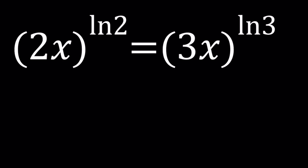We have 2x to the power ln2 on the left-hand side and on the right-hand side we have 3x to the power ln3. So 2 goes with 2 and 3 goes with 3.